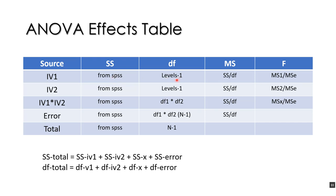We can get the degrees of freedom from SPSS, but you don't really need to. We take the sum of squares, divide by the degrees of freedom to get mean squares, and then divide mean squares for factor 1 by the mean square error to get the F value.